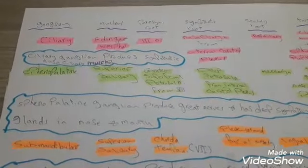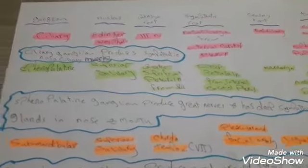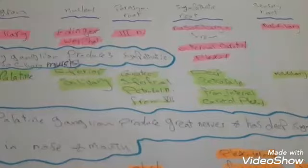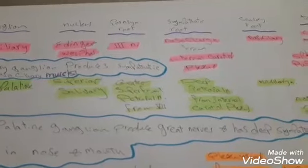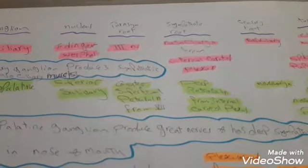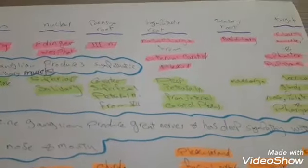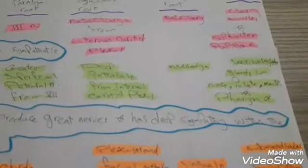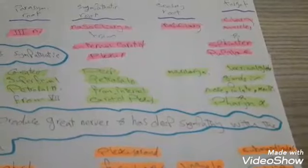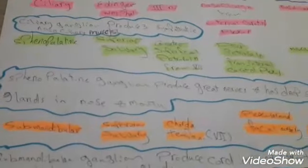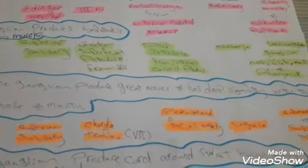The second ganglion is the sphenopalatine ganglion. Its nucleus is the superior salivatory nucleus. The parasympathetic root is the greater superficial petrosal nerve from the facial nerve. The sympathetic root is the deep petrosal nerve from the internal carotid plexus. The sensory root is the maxillary nerve. The target is the lacrimal glands and mucus-secreting glands in the nose, palate, mouth, and pharynx.